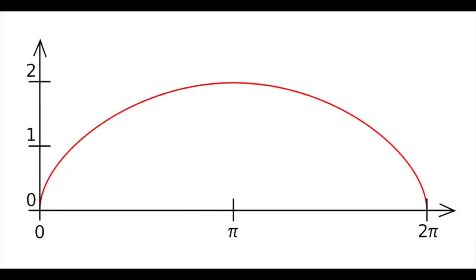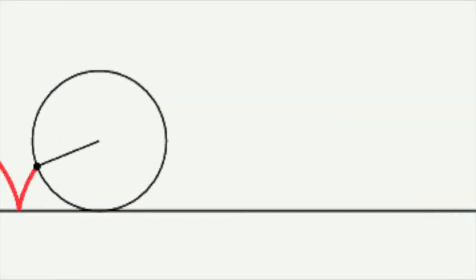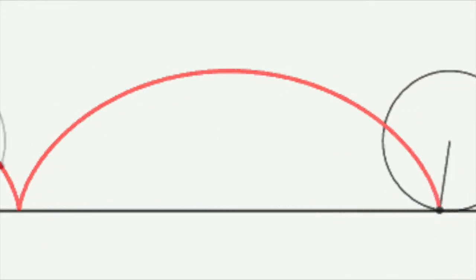A cycloid is the shape defined by a fixed point on a wheel as it rolls around. In other words, it's the locus or path of a point on the rim of a circle rolling along a perfectly straight line.